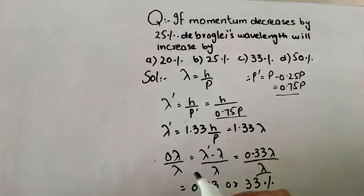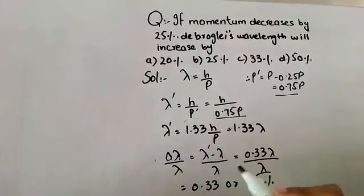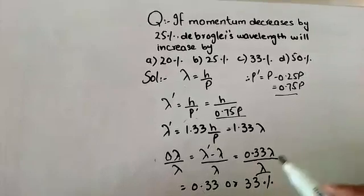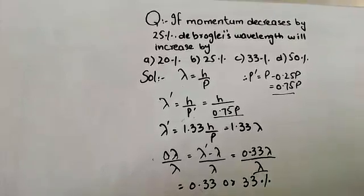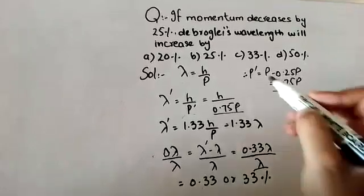Del lambda over lambda is equal to lambda dash minus lambda over lambda, which equals 0.33 lambda over lambda. Solving this gives us 0.33, which is 33%. So the answer is C.